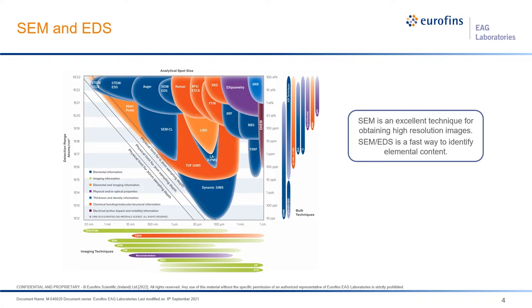Outside the box on the right-hand side are the bulk techniques — not surface sensitive, but giving information from the bulk of the material. On the left-hand side, we're going to be focusing on SEM and EDX: SEM as an imaging technique outside the box, and EDS within the box to give us matrix-level composition. SEM is an excellent technique for obtaining high-resolution images, and EDS is a fast way to identify elemental content.